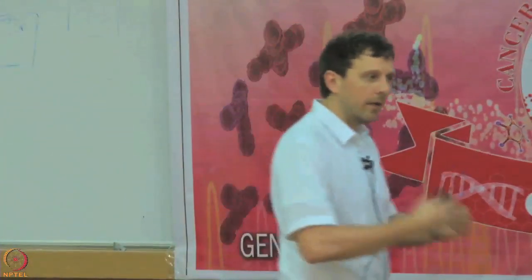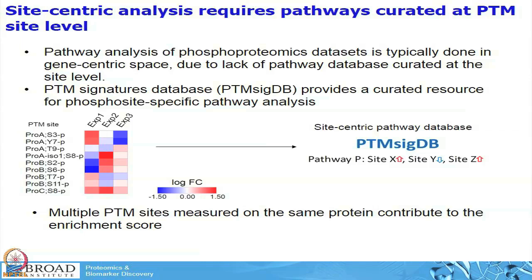All of these databases available now are curated at the gene-centric level. I want to introduce you to a project we are doing at the Broad Institute together with many collaborators, where we are actually trying to come up with a pathway database curated at the site level — at the phospho site level. We call that the PTM signatures database, and the goal is to be able to score each and every single phosphorylation site directly against the database.